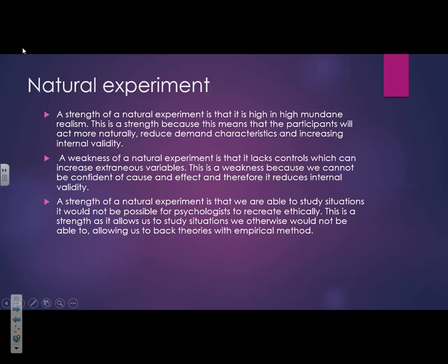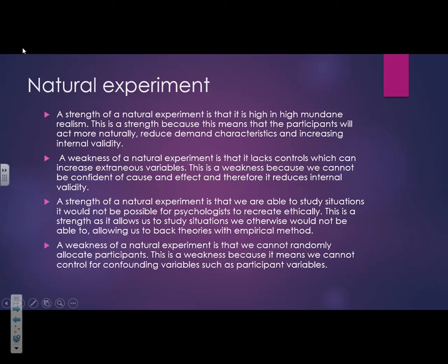For example, you can't have a theory about trauma from earthquakes and then make participants experience one. You have to wait for those events to happen and draw information from them — that's what natural experiments allow us to do. Also, as with quasi experiments, we cannot randomly allocate participants in natural experiments, so again there's a problem with confounding variables.